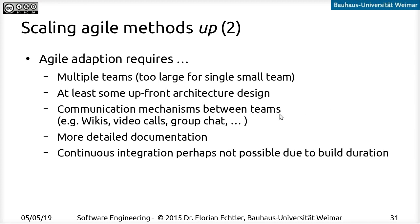Teams also need to communicate. If they're in the same building, you can have something like a weekly meeting between the Scrum masters. For distributed teams, you need to use group chats like Slack, regular Skype calls, or a wiki to communicate and create documentation — a wiki is a good idea where everybody keeps their notes and others can look them up. For really large systems, it might not be possible to do continuous integration all the time, since the build time may simply be too long.